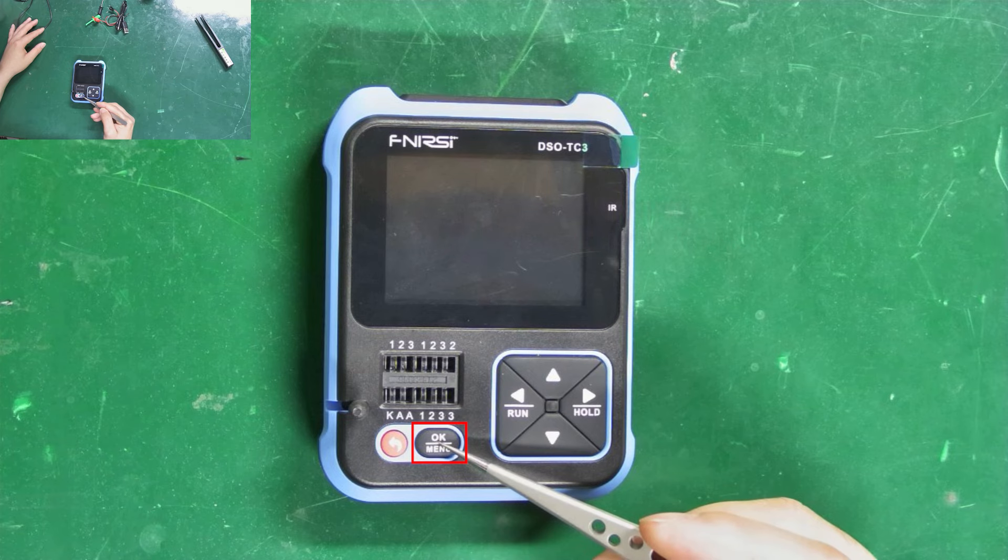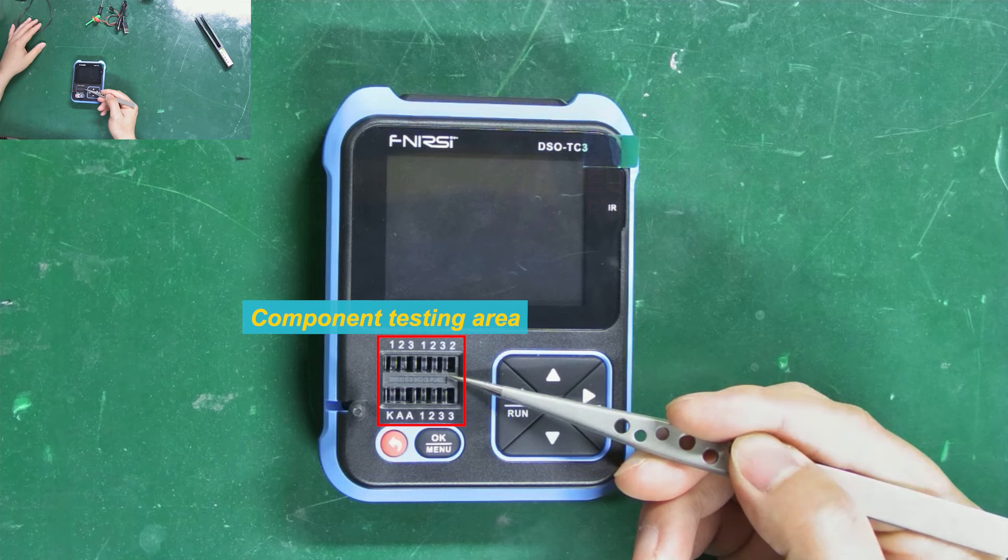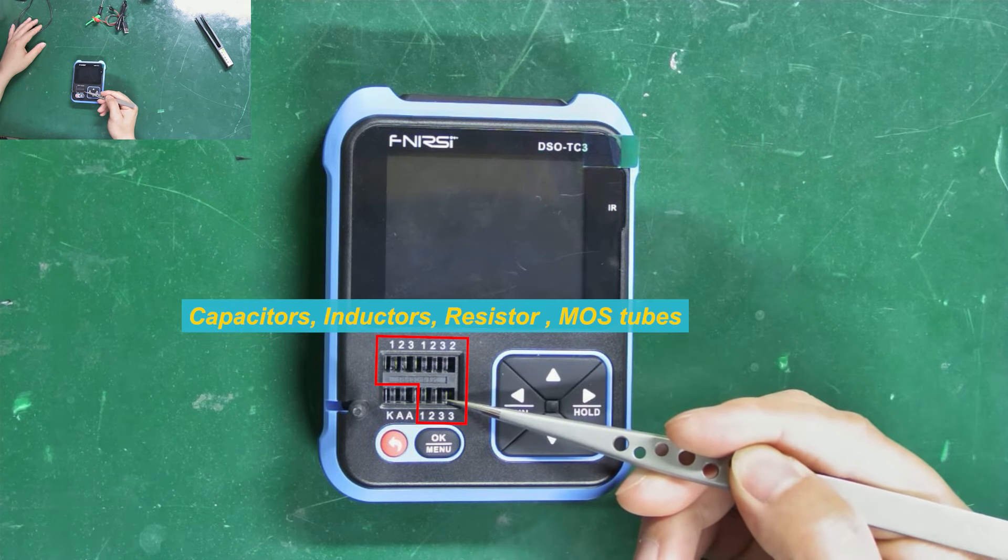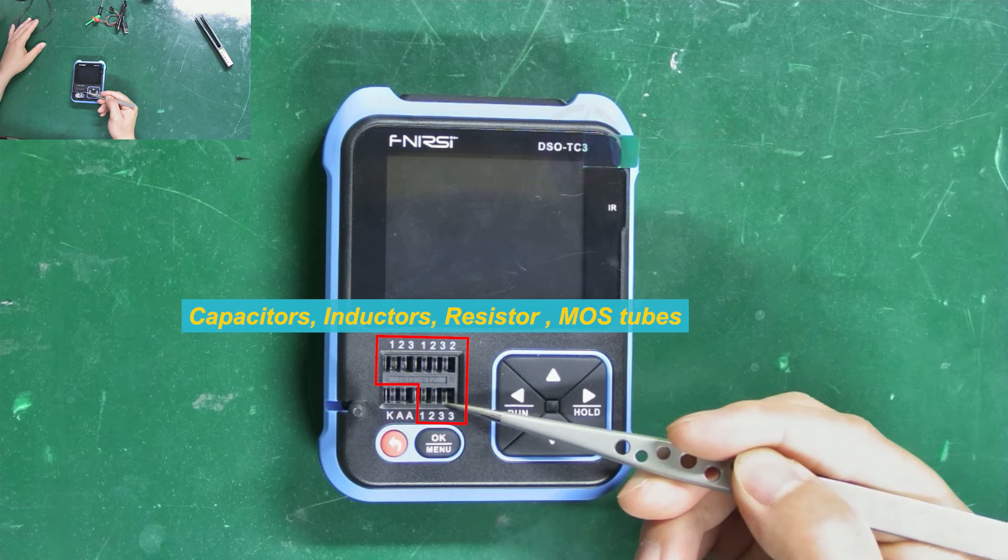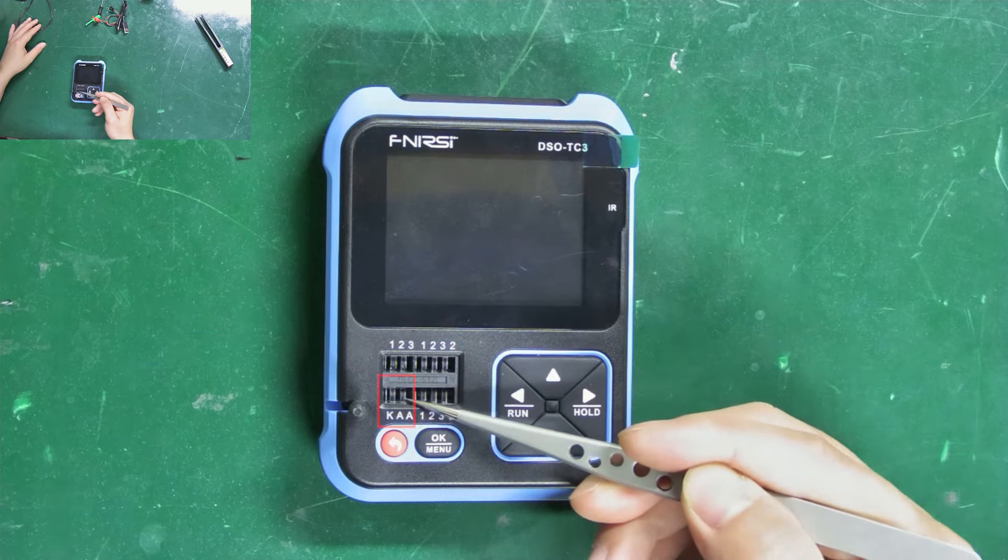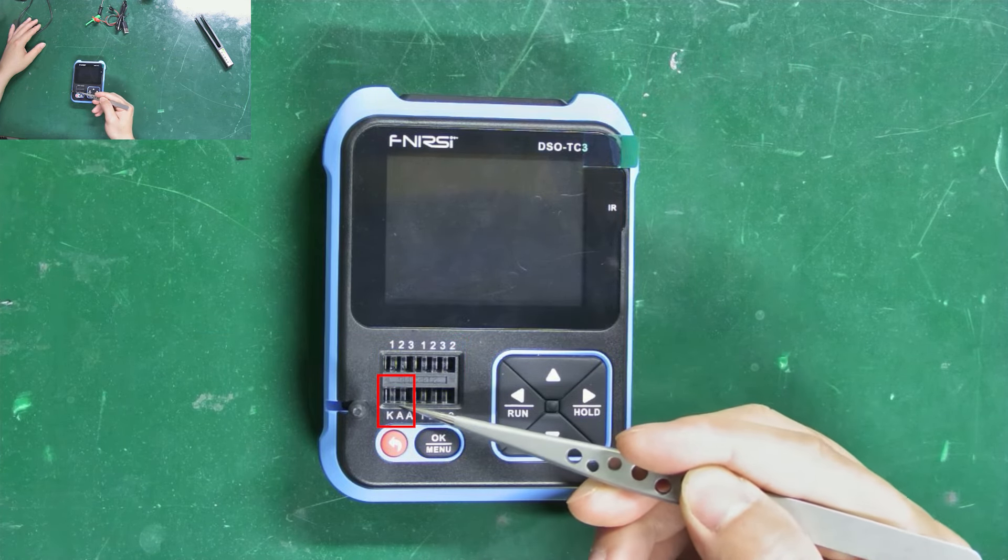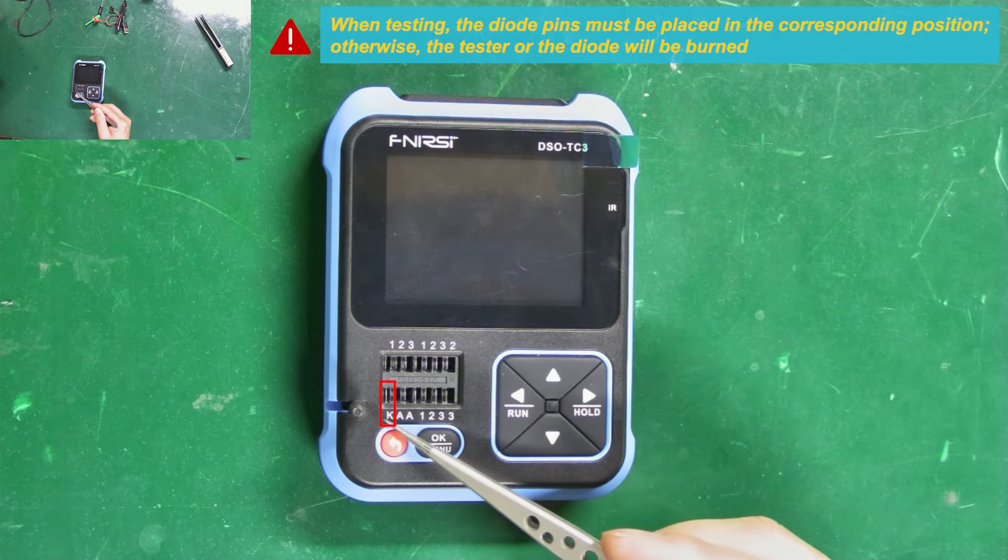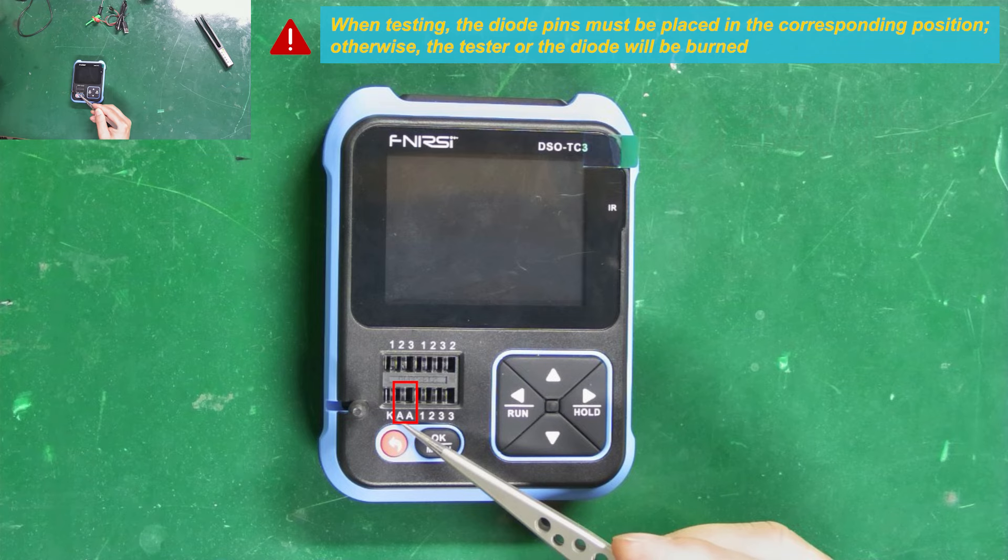Here's the component testing area. These three areas can test components such as capacitors, inductors, resistors, and MOS tubes. Their testing and usage methods are the same. The KAA is mainly used to test voltage-resistant diodes. The K on the first pin on the left represents the positive pole. The two As on the second and third pins represent the negative pole.